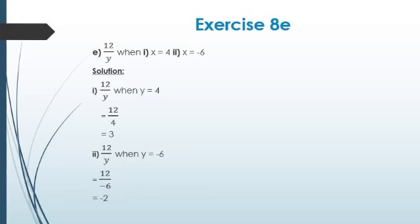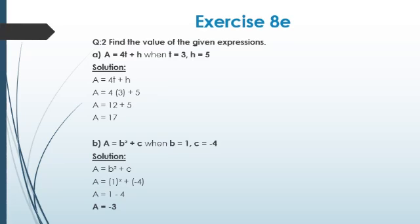Next Part E: 12 ÷ y when y = 4 and when y = −6. Here 12 is in the numerator and the variable is in the denominator. When negatives are involved, minus times minus gives plus — so the sign rules apply here too. Part F of Question 1 is your homework.